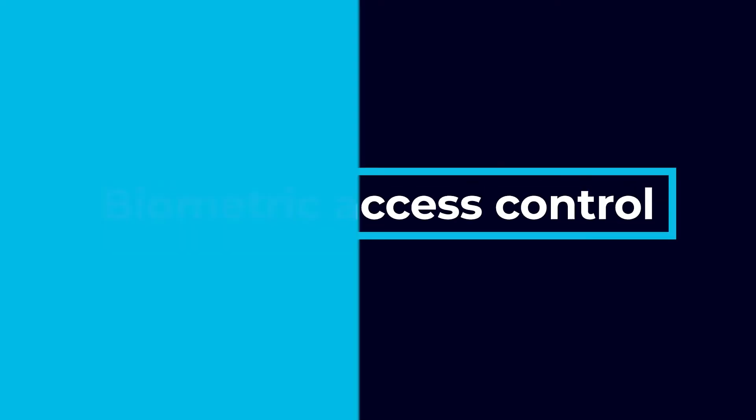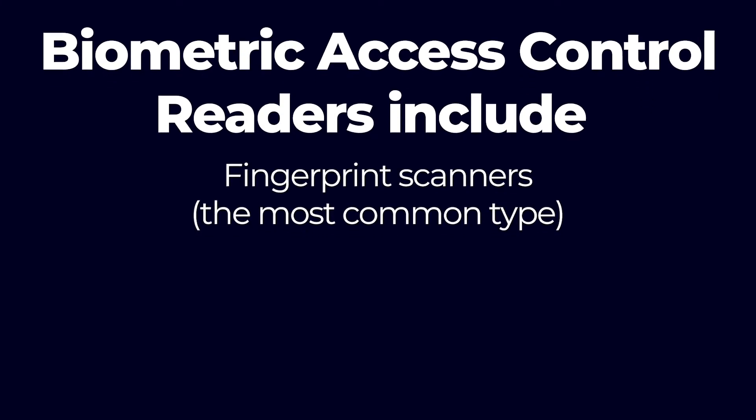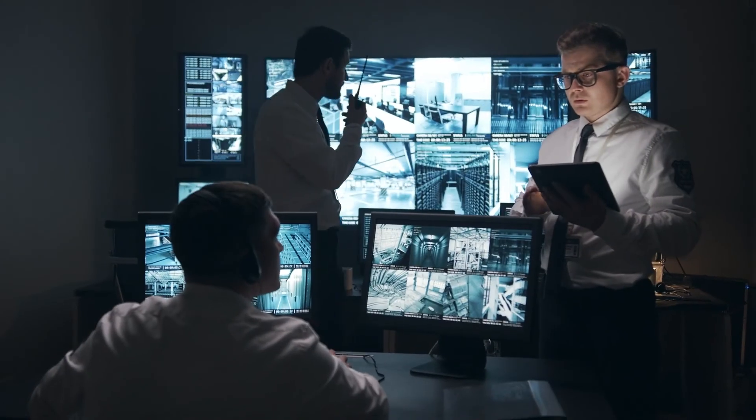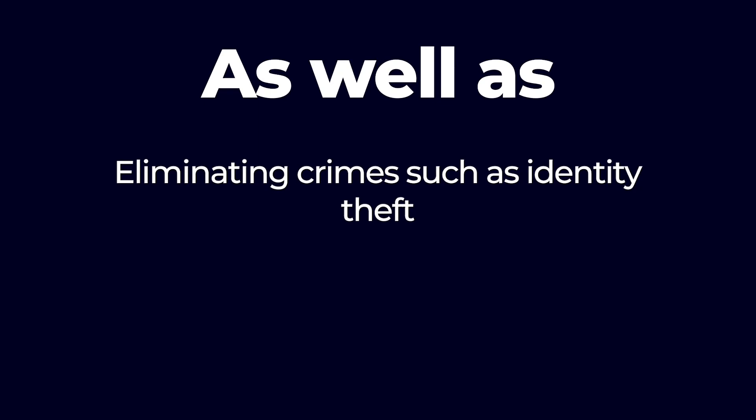Data encryption also protects IP systems. Now let me tell you about a few types of modern IP access control systems. One of the more recent additions is biometric access control. Biometric access control readers include fingerprint scanners, the most common type, eye scanners, facial recognition readers, and hand readers. Biometric access control is useful in a wide range of commercial applications, from office buildings to maximum security and government facilities. Biometric readers provide a non-invasive, quick, and foolproof way to identify everyone that enters and exits your business.